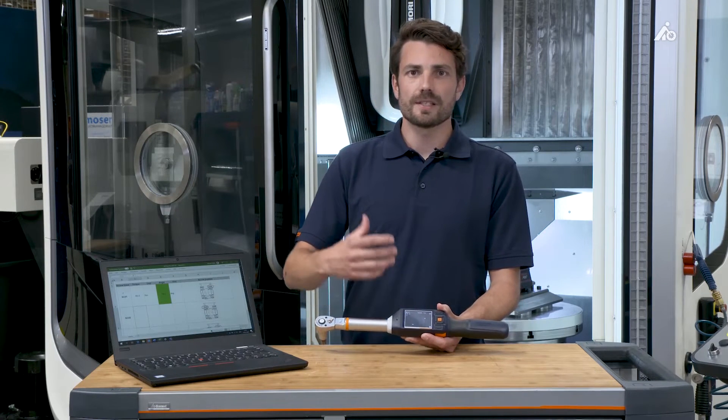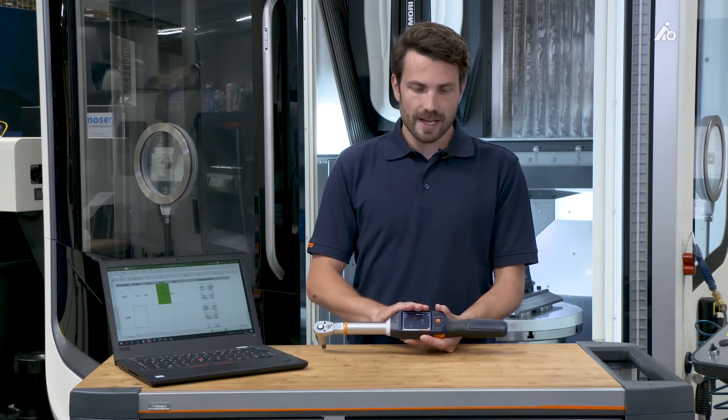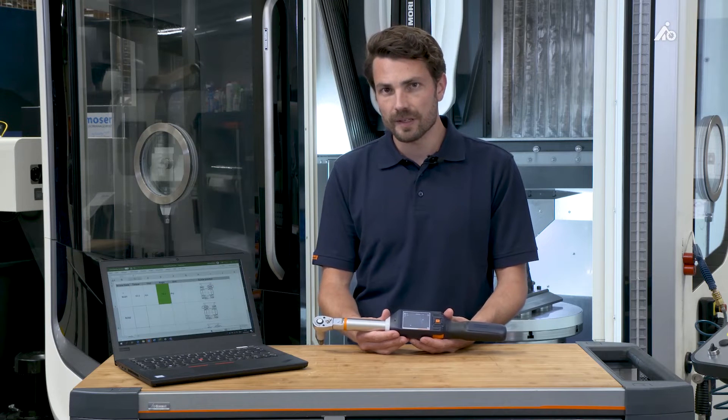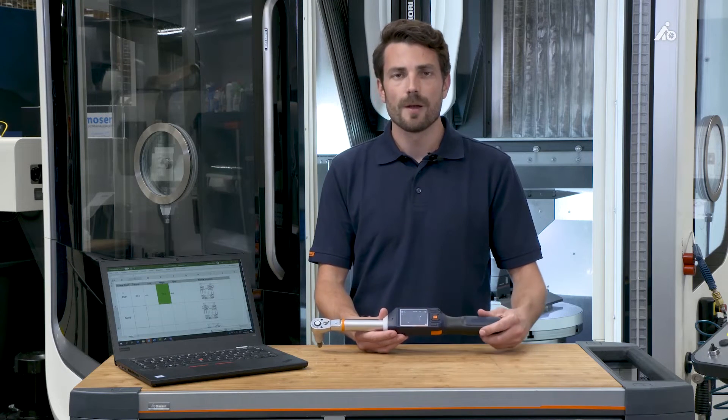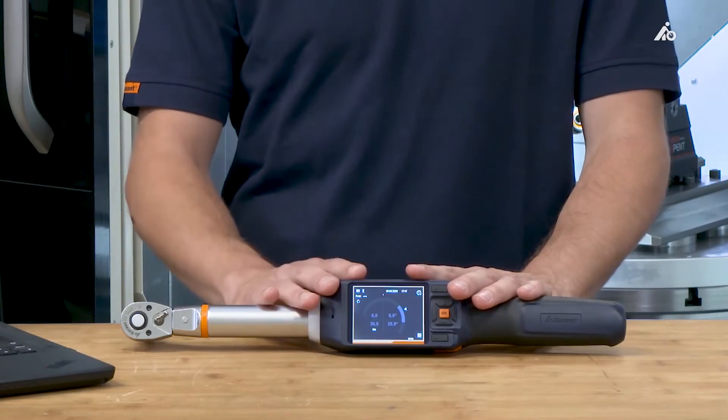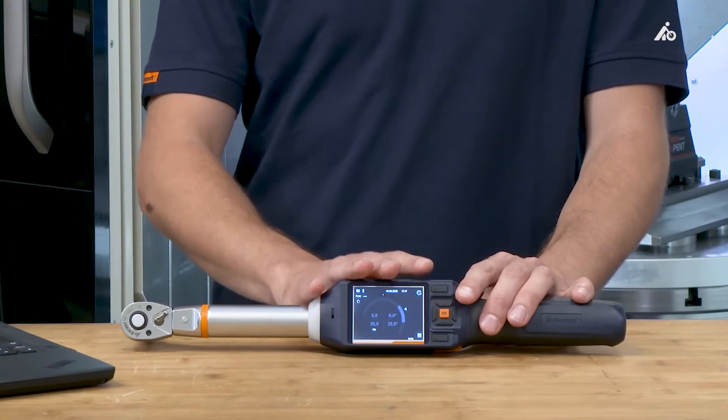The digital documentation is implemented in the wrench. It can be implemented very easily in existing quality assurance processes via this HID function, and in addition to these highlights, the measured values that are stored on the wrench can also be accessed via the app to be exported again separately.